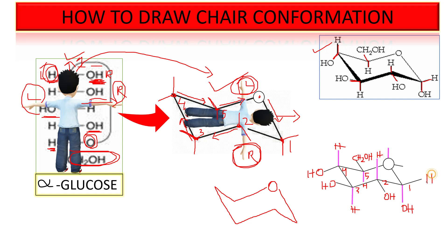In this way we can draw any kind of molecule in chair conformation. This is the alpha glucose structure in chair conformation. Thank you for watching this video.